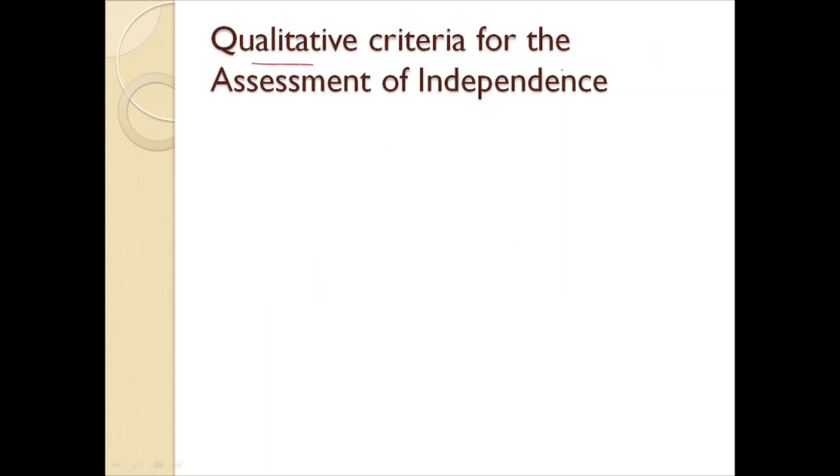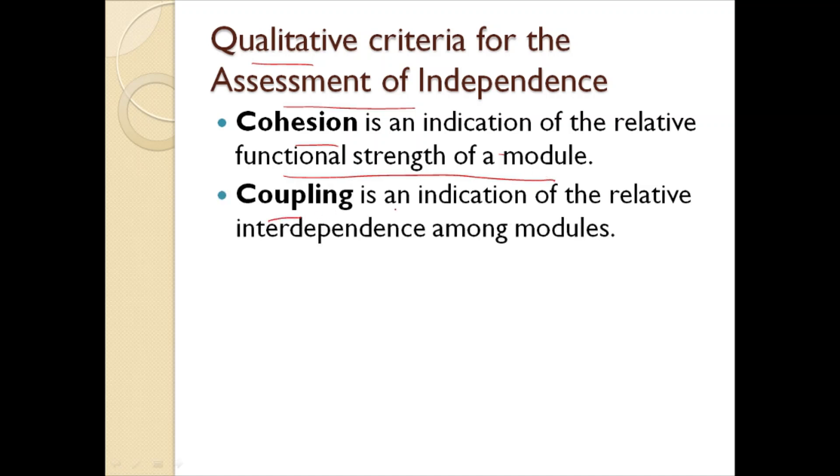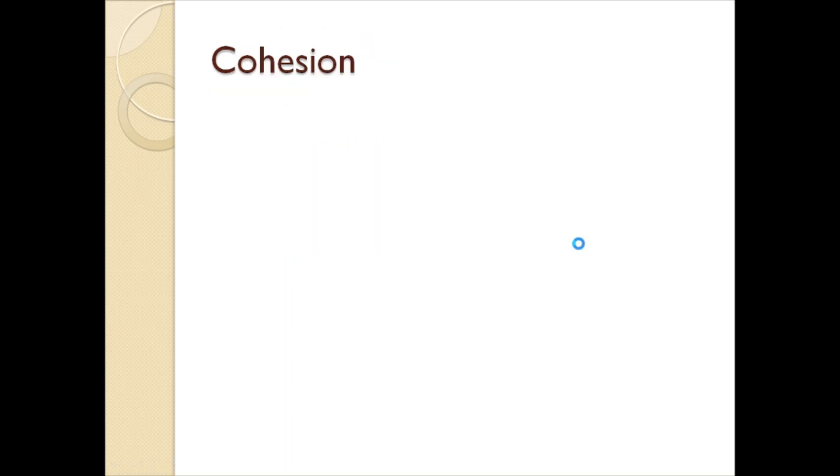What are the qualitative criteria for assessment of independence? Here we come with two concepts that is cohesion and coupling. Cohesion is an indication of the relative functional extent of the module and we talk about coupling it is an indication of the relative interdependence among modules.